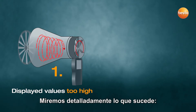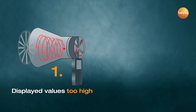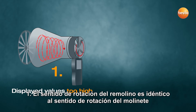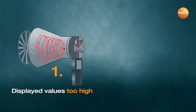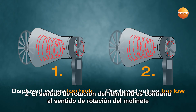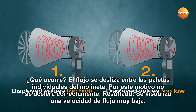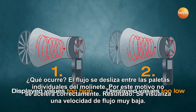Let's take a closer look at what happens. Case 1: The direction the swirl rotates is the same as that of the vane. The flow hits a larger cross-sectional area of the individual blades of the vane, making it accelerate too fast. Case 2: The direction the swirl rotates is opposite to that of the vane. The flow passes between the individual blades of the vane, meaning it doesn't accelerate properly. Result: an inadequate flow velocity is displayed.